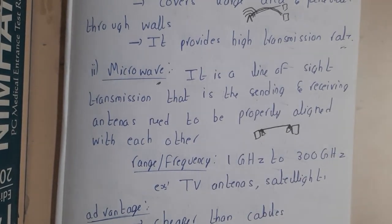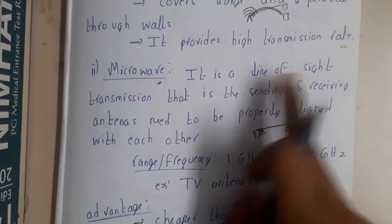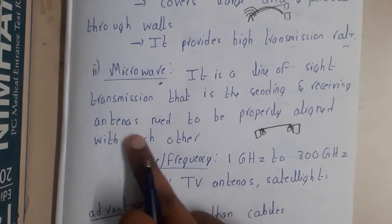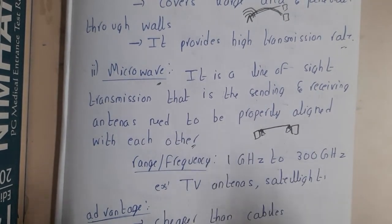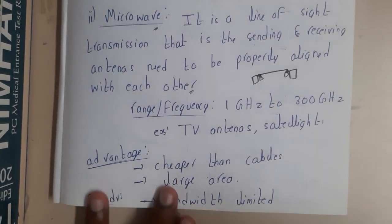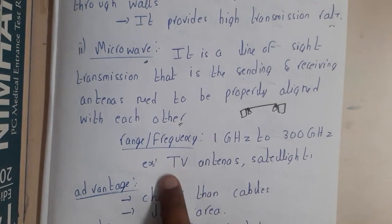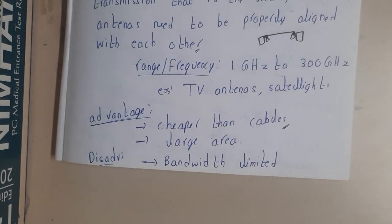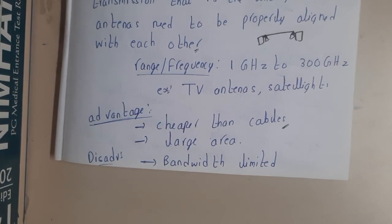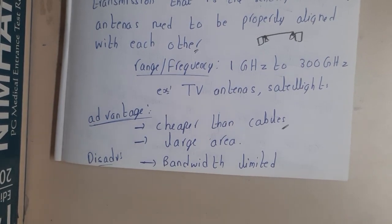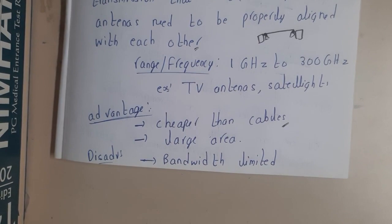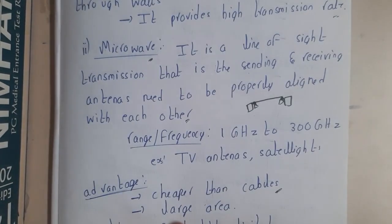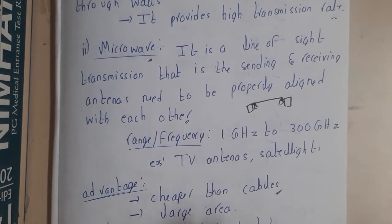Using these antennas, data transfer is done properly. The sending and receiving antennas need to be properly aligned to each other. The frequency range is from 1 gigahertz to 300 gigahertz. Examples include TV antennas and satellites. The major advantages are that they are cheaper than cables — instead of buying coaxial cables over long distances, you can set up antennas directly — and they work over larger areas. The disadvantages are limited bandwidth, limited speed, and the requirement for a clear line of sight. Any object in between will disrupt the data transfer.